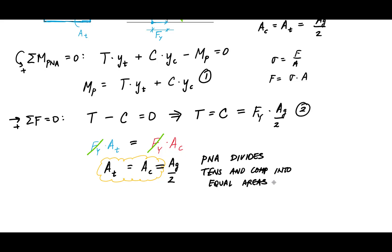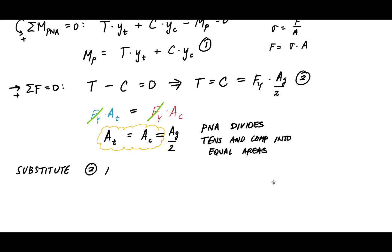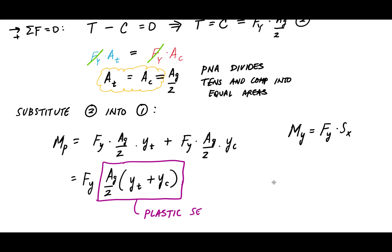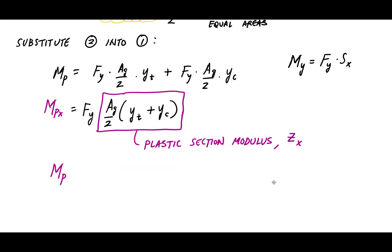Calling the moment equation (1) and the force equation (2), and substituting (2) into (1), we get MP. Recalling that the yield moment was FY times SX, if we put MP in the same form, the plastic moment is FY times a quantity we call the plastic section modulus, using the symbol Z. Since this is bending about the X axis, we call it ZX. So MPX equals FY times ZX — this is our plastic moment for this section.